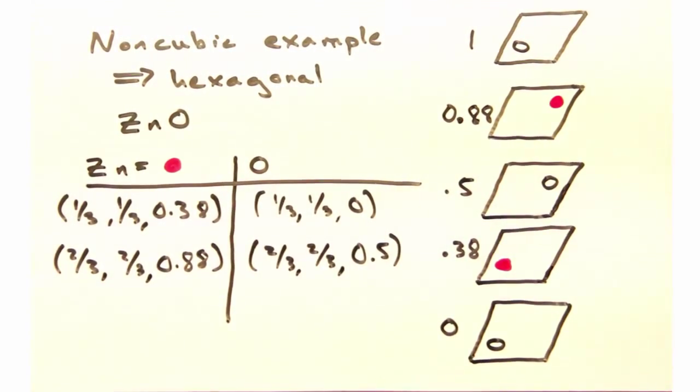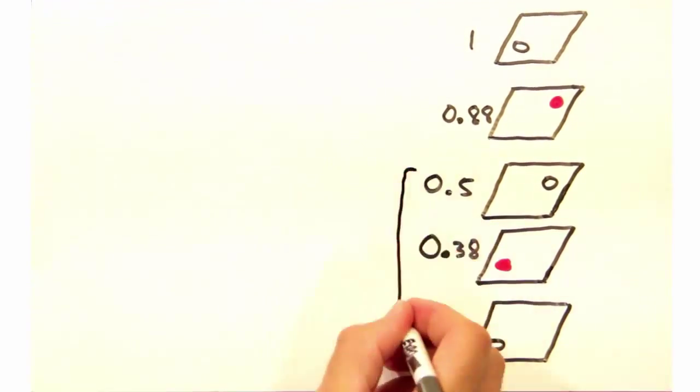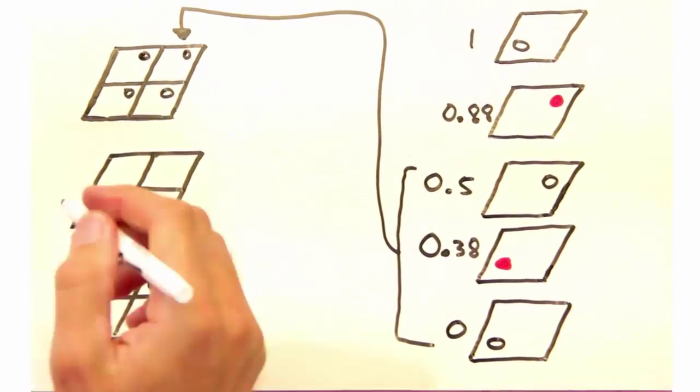Since we know the crystal is identical under translation, let's repeat our slices so we have a two-by-two section for each layer.